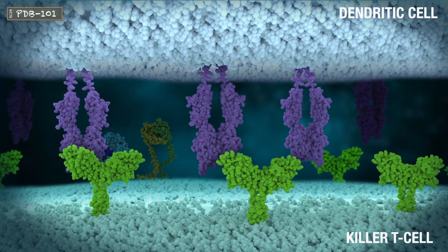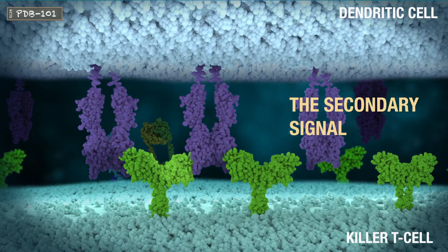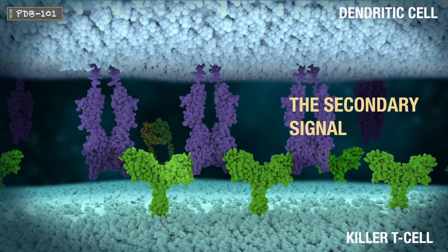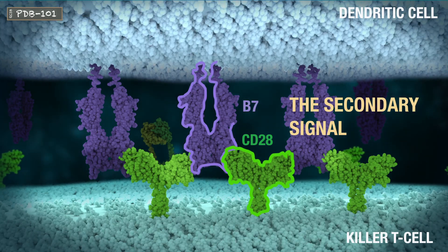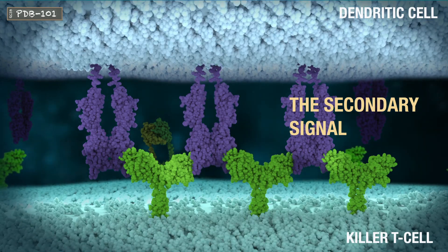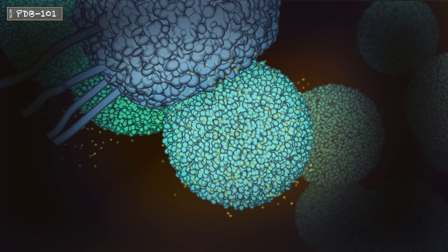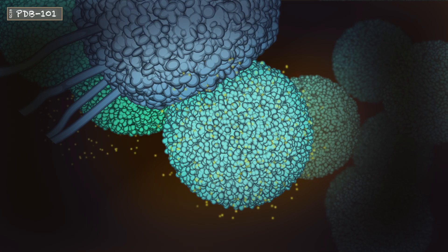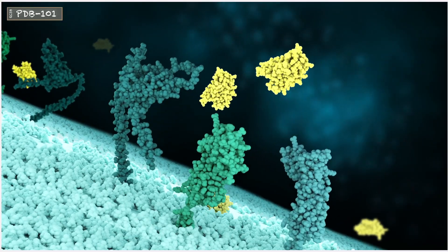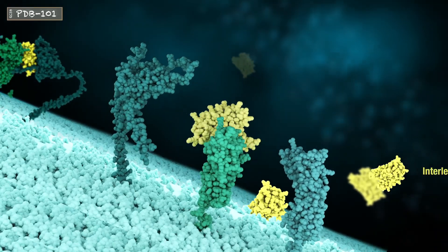However, there is no immune response without the secondary signal where the T cell CD28 protein binds to B7 proteins on the dendritic cell. These two signal phases trigger self-stimulation of the T cells, which produce the signaling molecule IL2 and increase the IL2 receptor sensitivity.